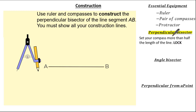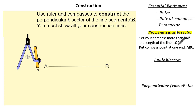All we need to do is follow some simple steps. Firstly, ensure your compass is set for more than half the length of the line and lock it. Next, put your compass point at one end of the line and arc. Lastly, repeat that process by putting the compass point at the other end of the line, arc, and then simply connect. Let me demonstrate using this question.